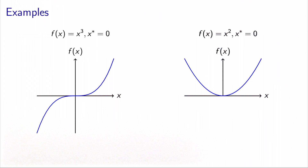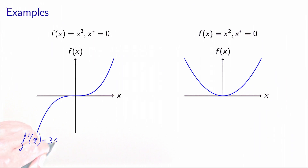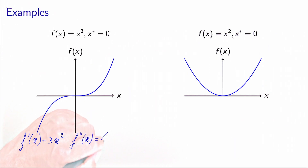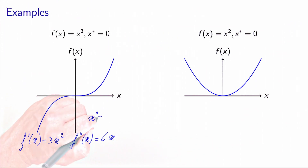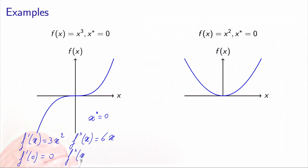In the last video, we used as an example f(x) = x³ to illustrate that the necessary conditions were not sufficient. Let's do the analysis again with this function. We know that f'(x) = 3x² and f''(x) = 6x. So if we take the point x* = 0, the first derivative is indeed equal to zero, but the second derivative is also equal to zero — so it's not strictly positive. Therefore, the sufficient conditions of optimality are not verified in this case.